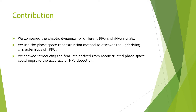The main contributions of the paper are as follows. First, we compare the chaotic dynamics for different PPG and RPG signals. Second, we use a phase-space reconstruction method to discover the underlying characteristics of RPG. Finally, we show that introducing features derived from the reconstructed phase space can improve the accuracy of HRV detection.